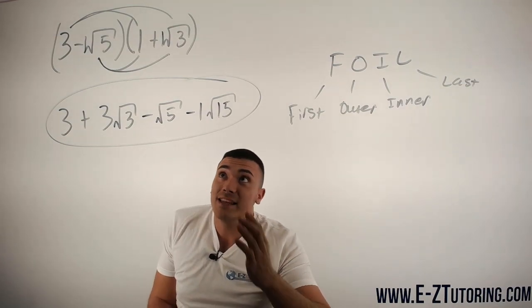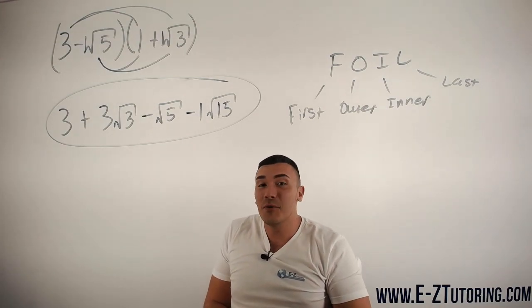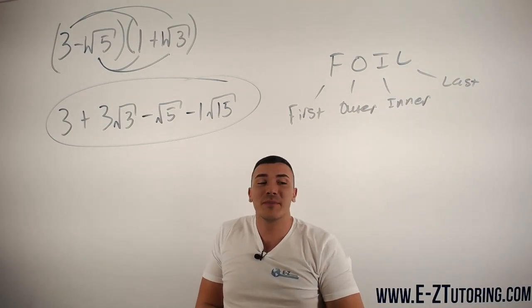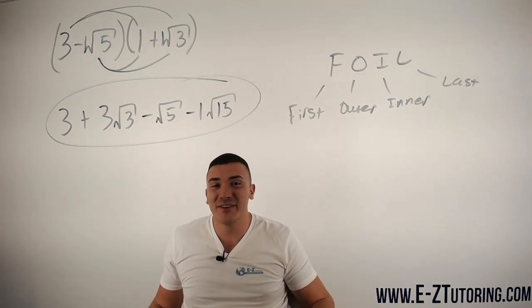So that is how you can foil with square roots. If you guys ever want ACT or SAT help, be sure to visit my website www.e-ztutoring.com. Thank you guys and have a good day.